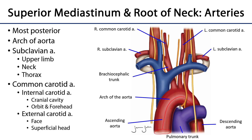Coming off of the arch of the aorta typically are three major branches: the first being the brachiocephalic, the second being the left common carotid artery, and the third being the left subclavian artery. The brachiocephalic artery ascends from the superior mediastinum into the root of the neck, where it bifurcates into the right common carotid artery and the right subclavian artery. The subclavian arteries serve the upper limb, the thorax, the neck, as well as parts of the brain and spinal cord.